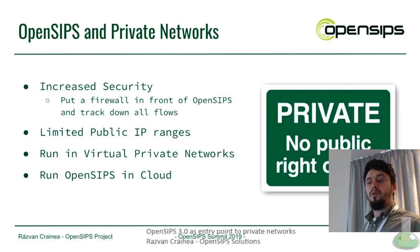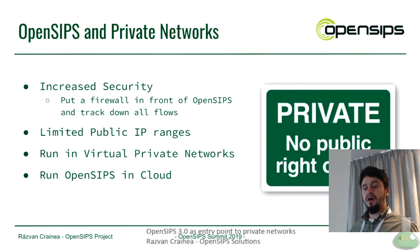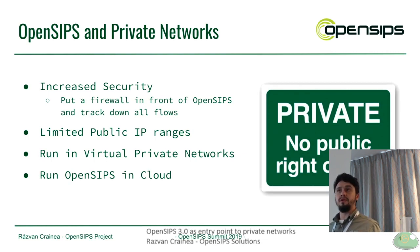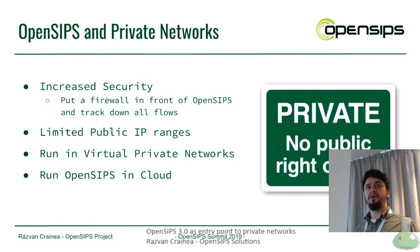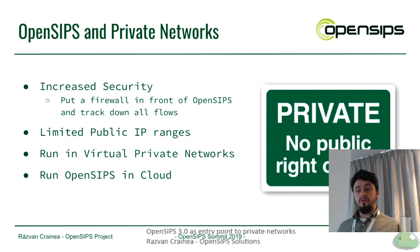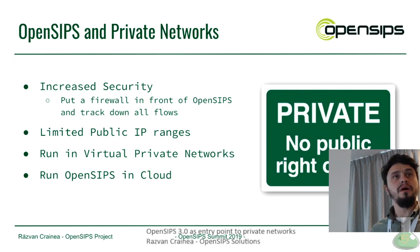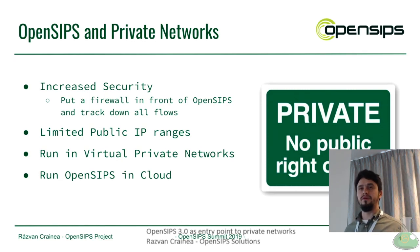Why would you use OpenSIPs in a private network? That's probably because you don't really want to, but you have to. You have to increase the security of your platform. You don't really have enough public IPs to support the many instances you might want to use, or you might run in a cloud or in private VPN networks where IP assignment is more or less limited.